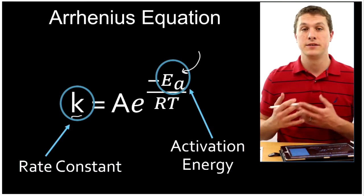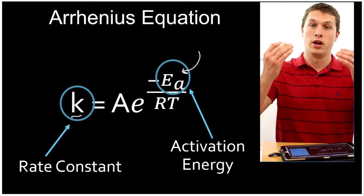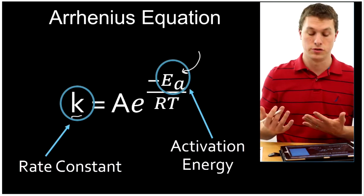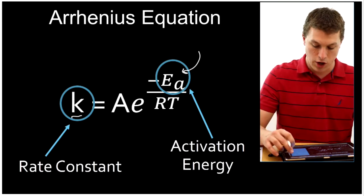And so what that means, basically, is if you have a really large activation energy, you get a smaller rate constant and a slower overall rate. Let's take a look at what all these other variables are.